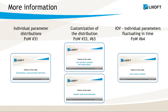Previous features of the WIC videos already explain how to define and customize the individual model. For example, feature of the WIC number 31 presents different distribution types available in Monolix, features of the WIC number 33 and 63 show how to customize them, and feature of the WIC number 64 explains how to model individual parameters which fluctuate in time.